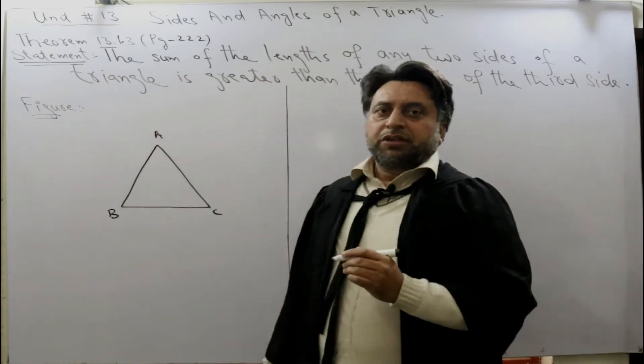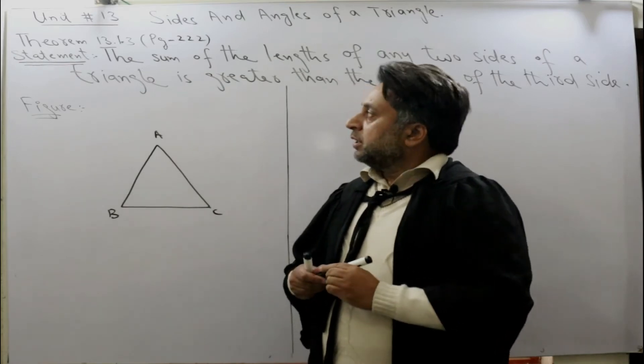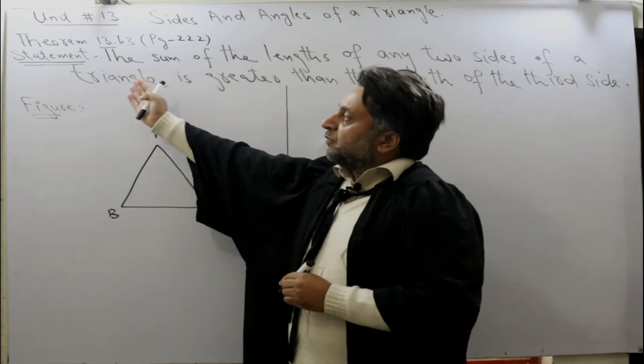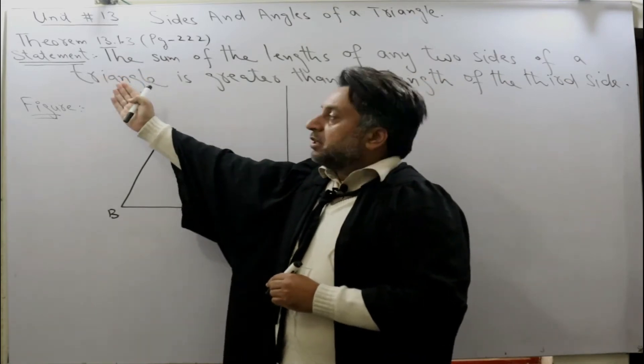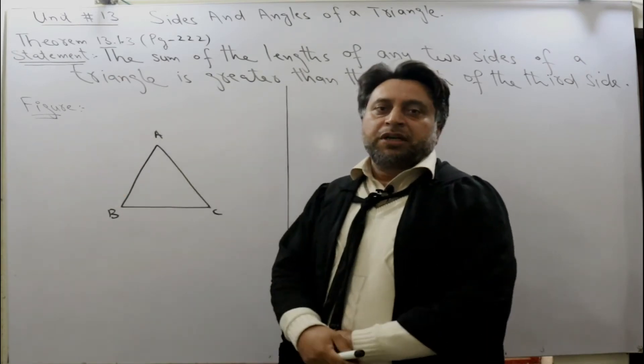We know that there are six elements in a triangle and similarly there are six elements in a theorem. The first element of a theorem is statement, the second element is figure, and the third element is given.